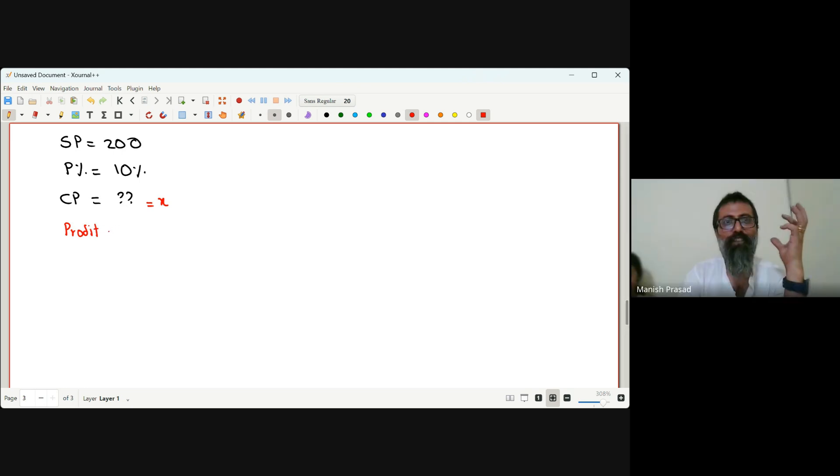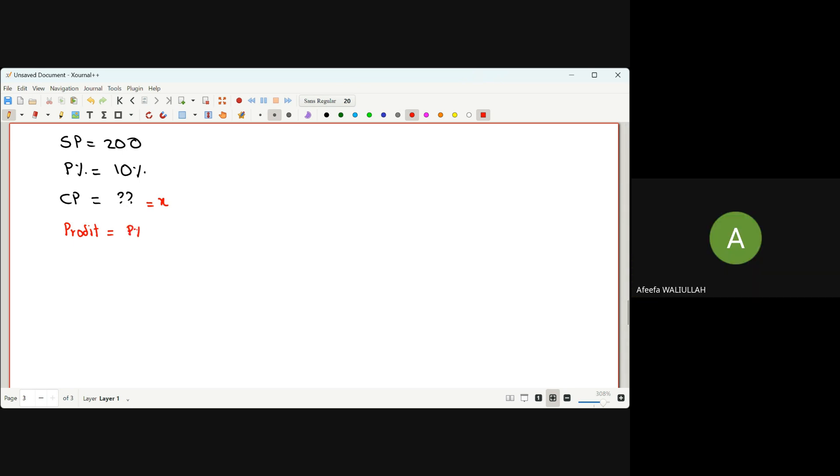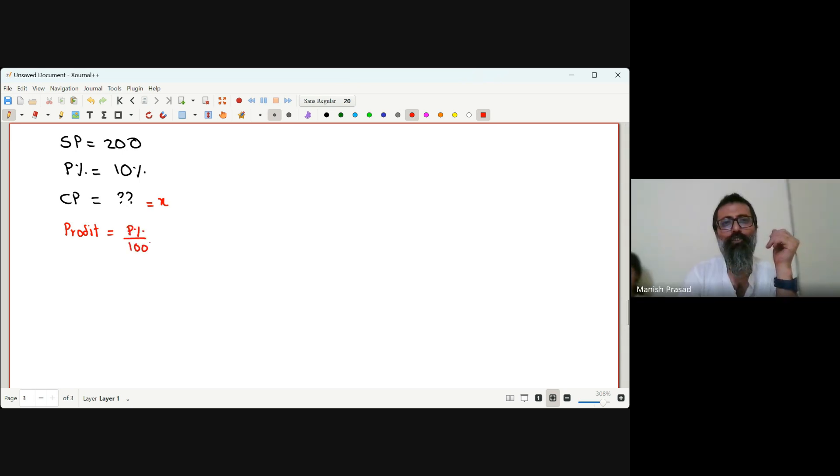Profit equals profit percent into CP. So profit percent is 10 over 100 into CP. CP is x since I do not know it, so this becomes x by 10.